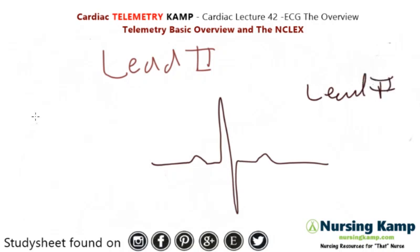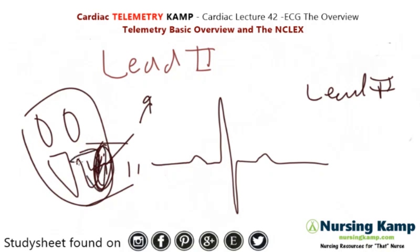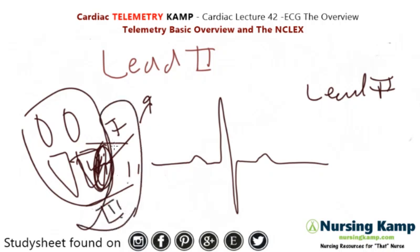Why do we look at lead two? With the ventricles and the heart, lead two looks at the left ventricle, which is the most important — that's where oxygenated blood comes out of the heart. Lead one is over here and lead three is over here. I talk about that in another lecture, but we're just going over an overview. So lead two looks at this ventricle.